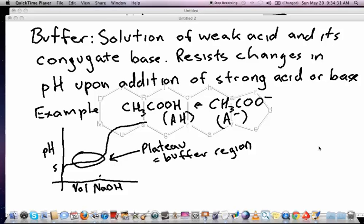This lecture is about buffer regions and when they occur in titration diagrams. First, let's define what a buffer is. A buffer is a solution of a weak acid and its conjugate base, and this solution will resist changes in pH upon addition of a strong acid or a strong base.